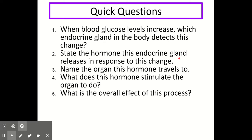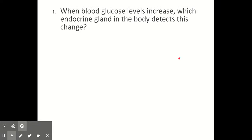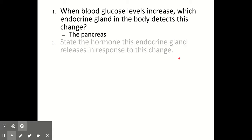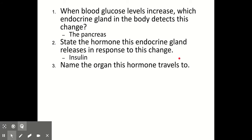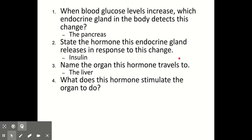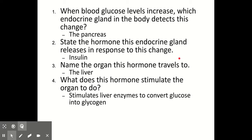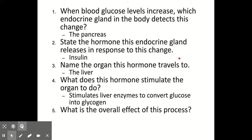Let's try some quick questions. Question one: when blood glucose levels increase, which endocrine gland detects this change? The pancreas. Question two: state the hormone this gland releases in response. Insulin. Question three: name the organ this hormone travels to. The liver. Question four: what does this hormone stimulate the organ to do? It stimulates the liver enzymes to convert glucose into glycogen. And what is the overall effect? To bring the blood glucose levels back to normal.